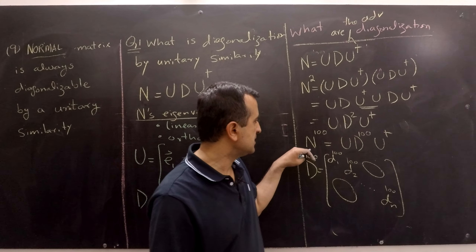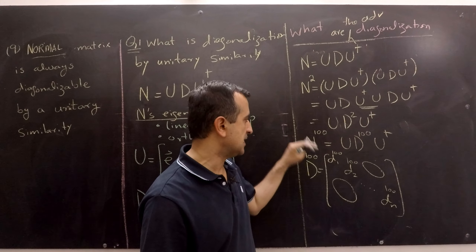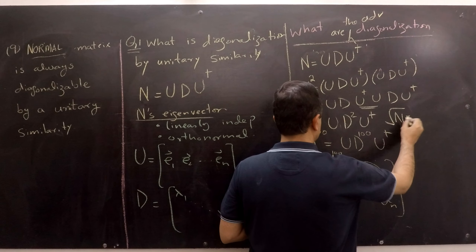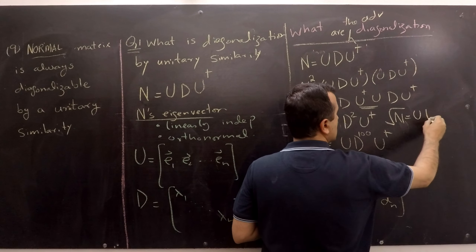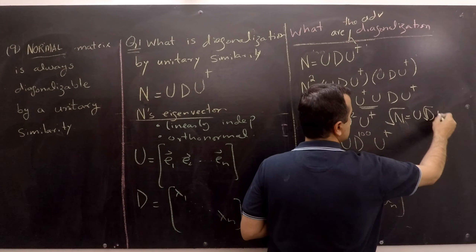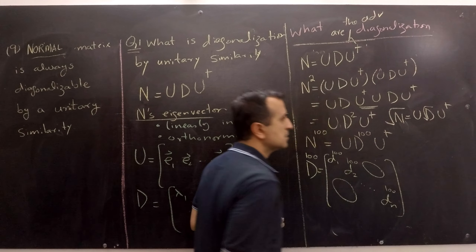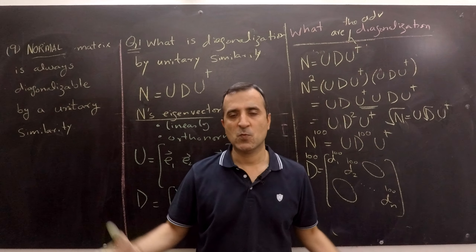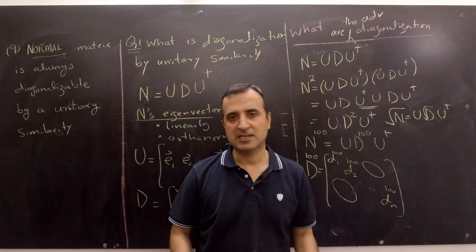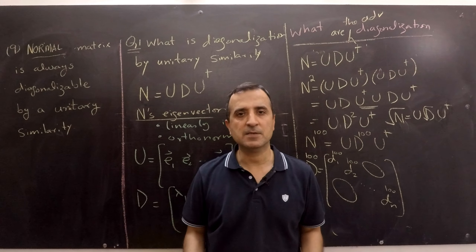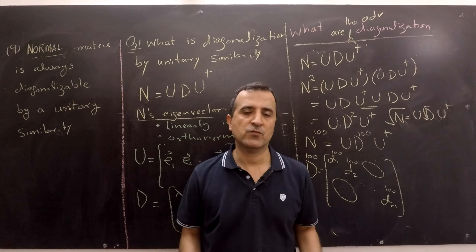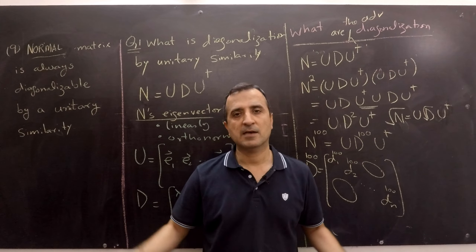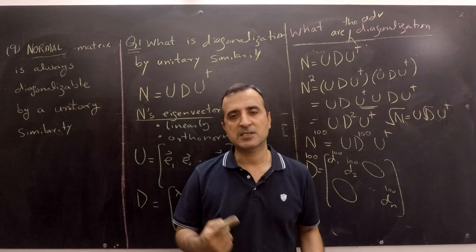Similarly, we can compute the square root of a matrix using diagonalization: the square root of N equals U times D^(1/2) times U conjugate transpose. Now that we have answered the basic questions — what is a normal matrix, what is diagonalization, and what is diagonalization by unitary similarity — we are ready for our proof. Let me clear the board and then prove that a normal matrix is always diagonalizable by unitary similarity.